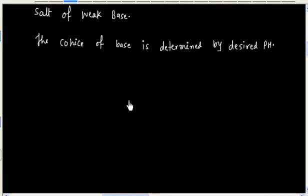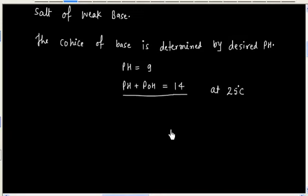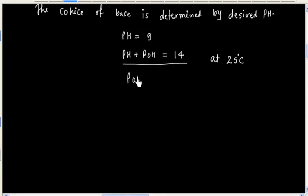For our case, pH is 9. We can also calculate pOH because pH plus pOH is 14 at 25 degrees centigrade. So pOH is 14 minus pH, and pH is 9, so pOH is 5.